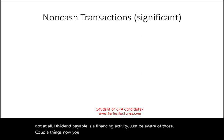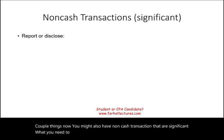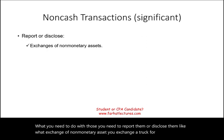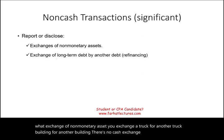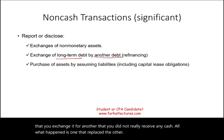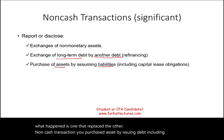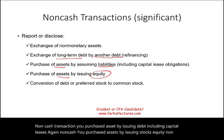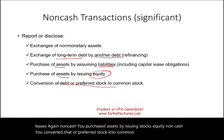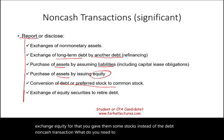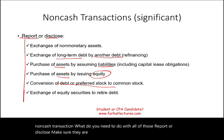You might also have significant non-cash transactions that must be reported or disclosed. Examples include: exchanging non-monetary assets (a truck for another truck); exchanging long-term debt for another debt (refinancing); purchasing an asset by issuing debt, including capital leases; purchasing assets by issuing stock; converting debt or preferred stock into common stock; and exchanging equity for debt. All of these are non-cash transactions — report or disclose them so users of the financial statements can make sense of the numbers.